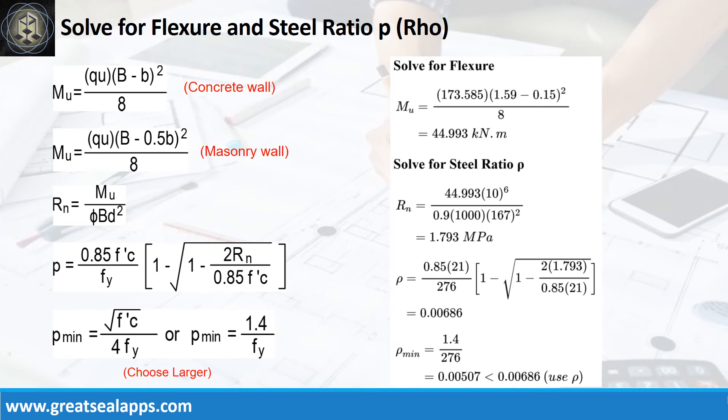Given ultimate soil pressure equals 173.585kPa, footing width equals 1.59 meters, and concrete wall thickness equals 150mm. The maximum moment is 44.993kN per meter. Given resistance factor equals 0.9, B equals 1000mm, and D equals 167mm. The beam design ratio RN equals 1.793MPa, and reinforcement ratio rho equals 0.00686.